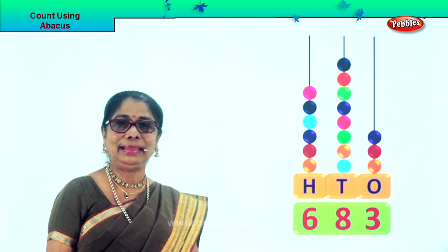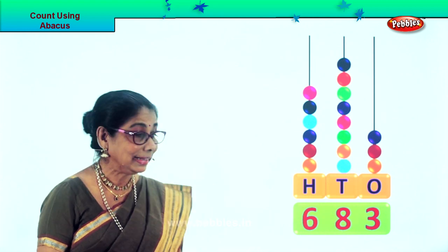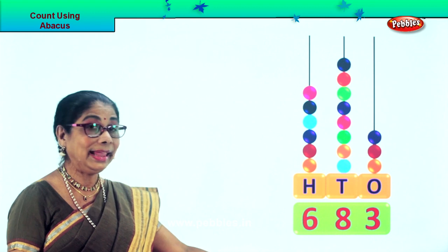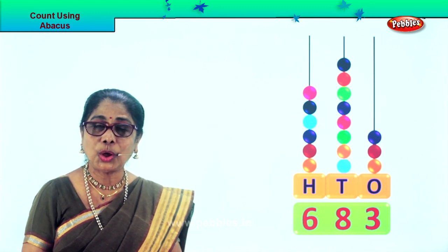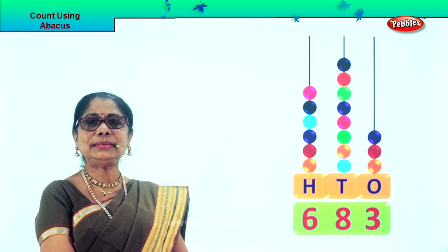Now we will read the number together: 683. What is the number we get? 683. Did you enjoy counting using abacus?